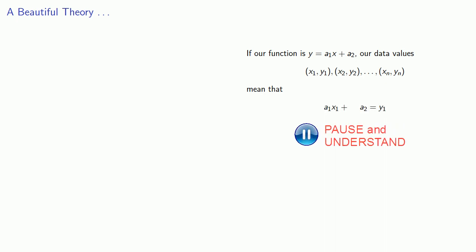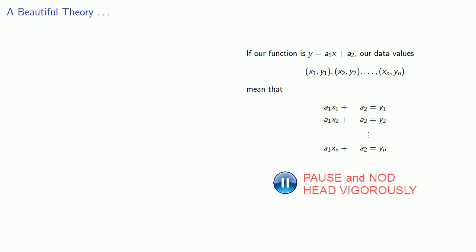So if our function is y equals a1x plus a2, our data values mean that a1x1 plus a2 should give us y1, a1x2 plus a2 should give us y2, and so on. And we can express this in matrix form.